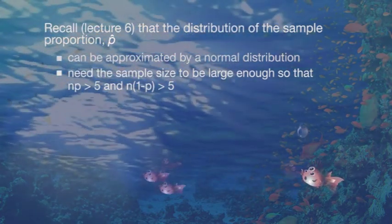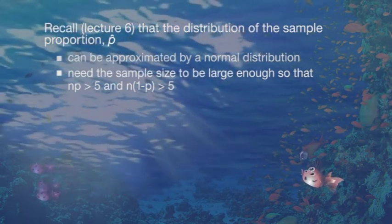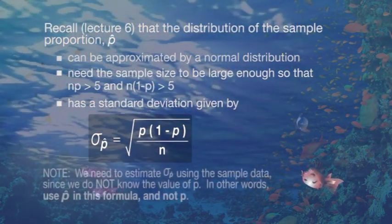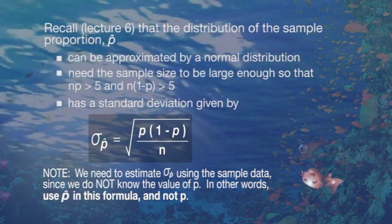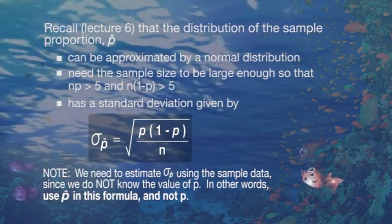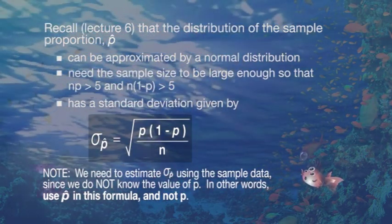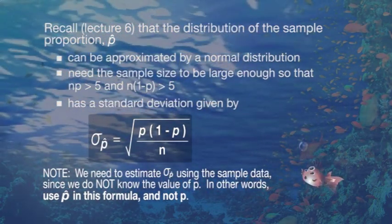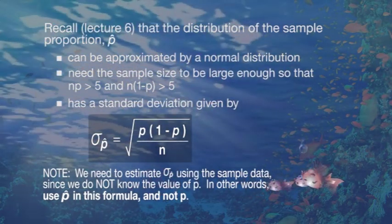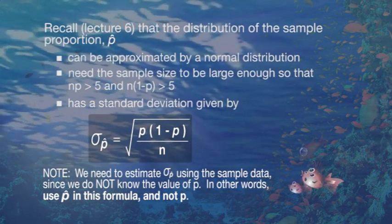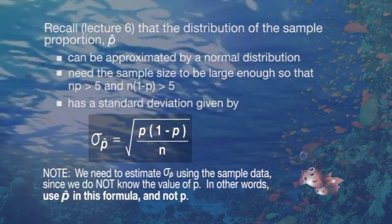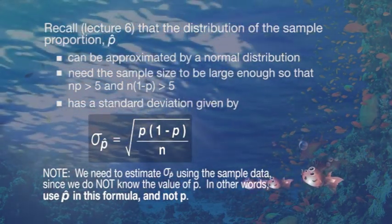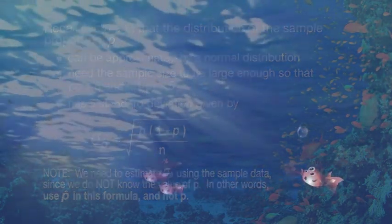If this distribution is approximately normal, we can see that the standard deviation of this distribution is given by sigma p-hat and this formula. Note however that p is the population proportion. When we're trying to find a confidence interval, we don't know the value of p. So in order to estimate sigma p-hat, which is called the standard error of the proportion, we can use sample data and replace p in the formula with p-hat.